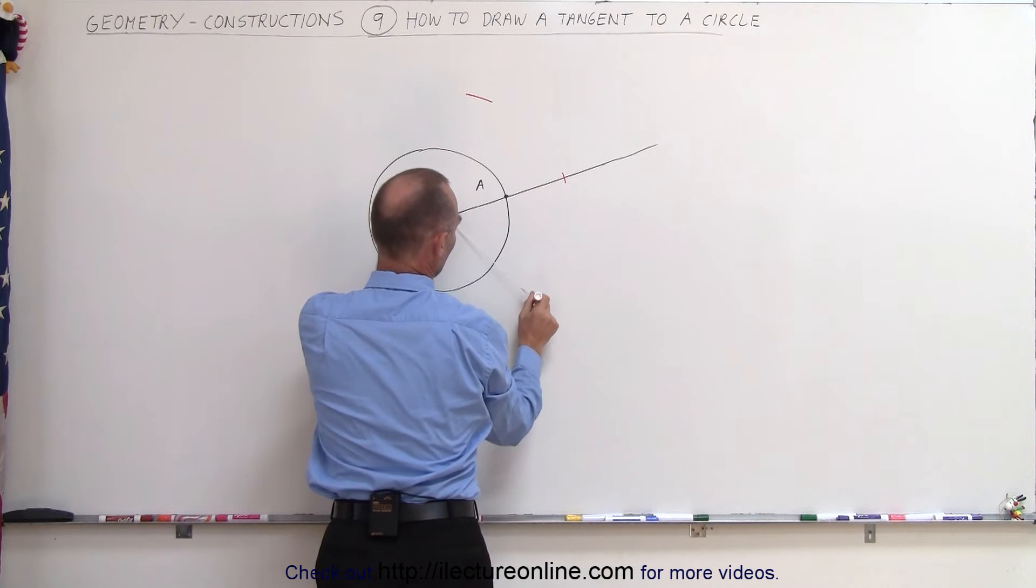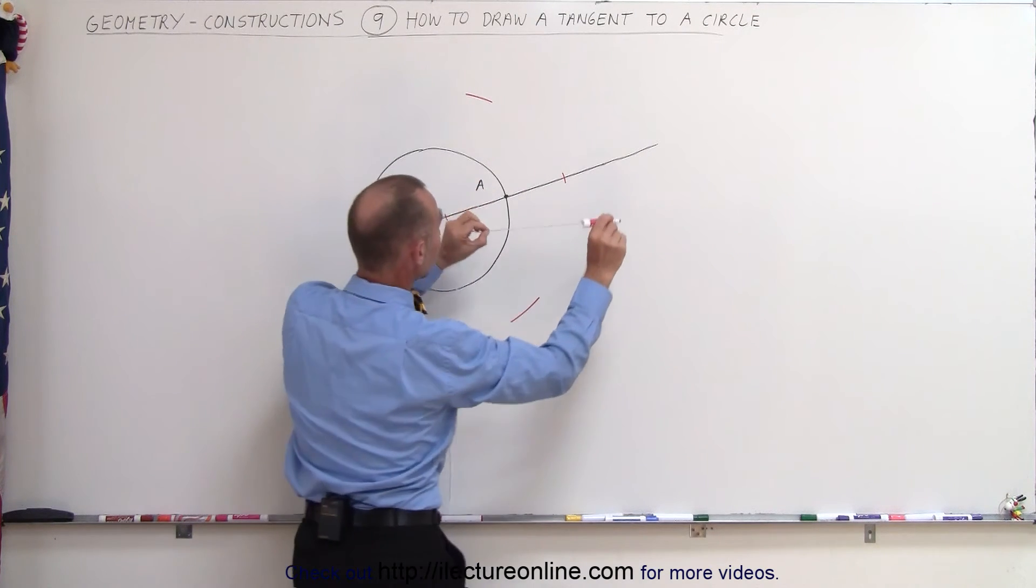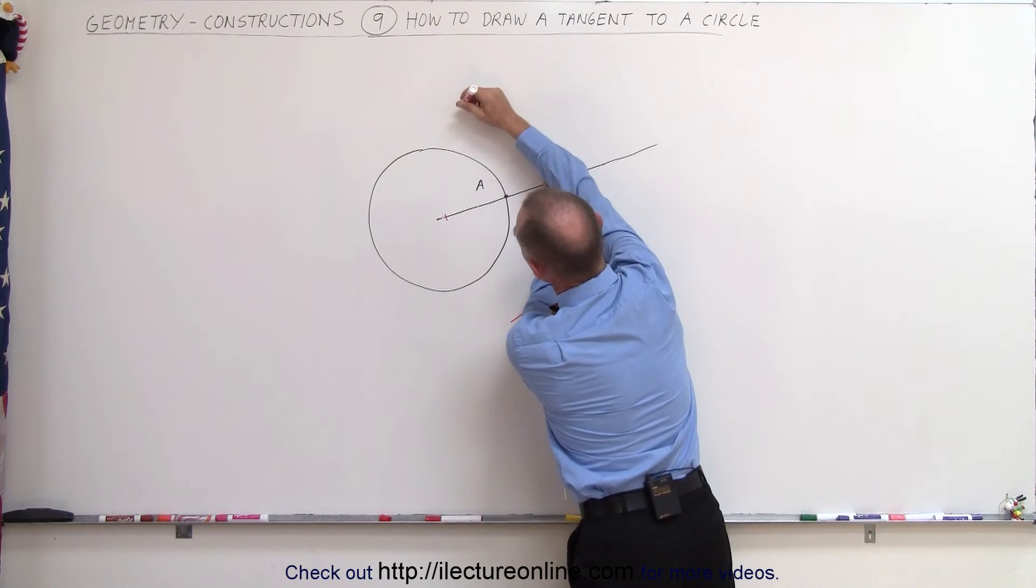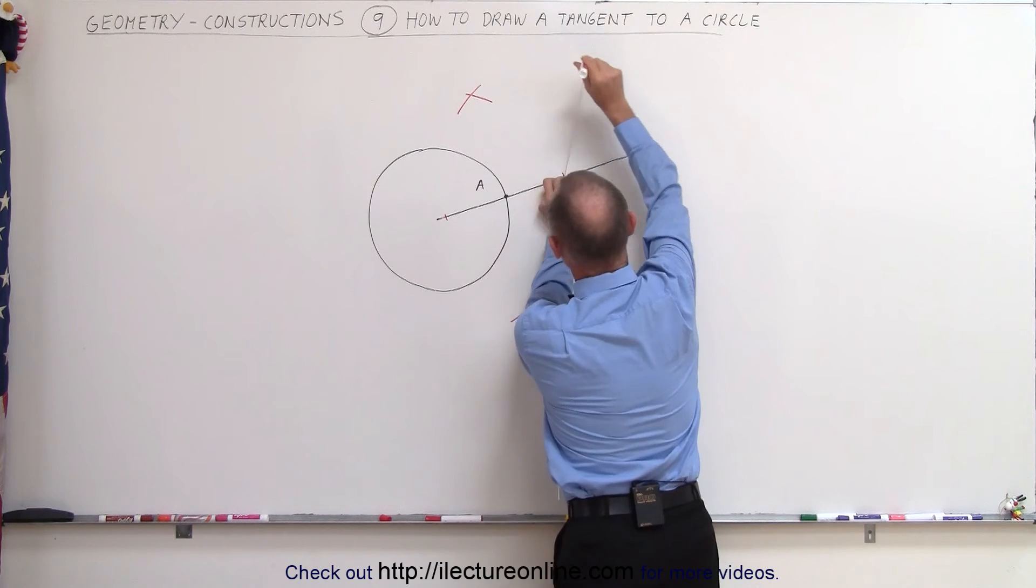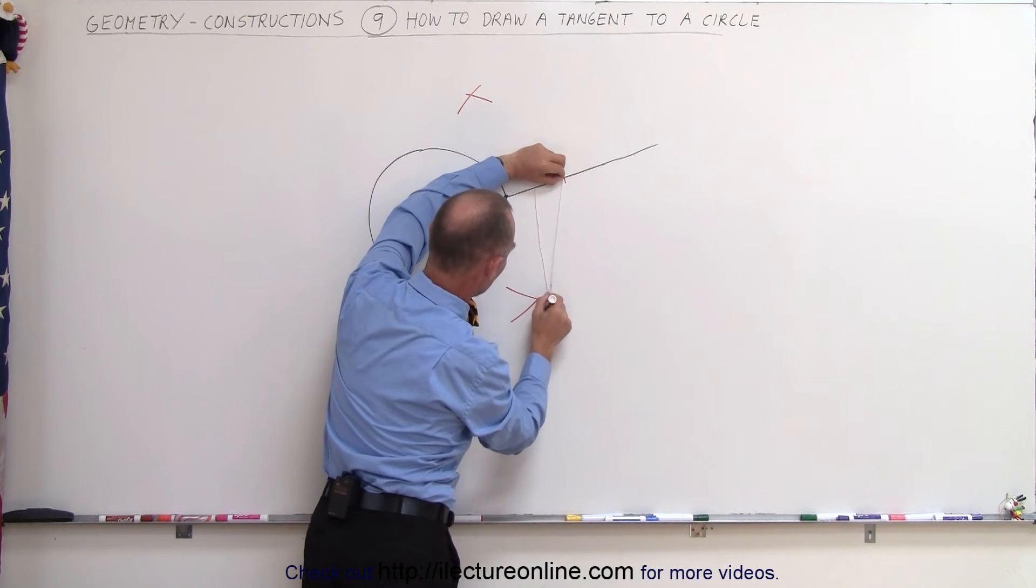I come over here and I draw an arc in this direction. Then using the same length string, I go to the other point right there. I draw another arc in this direction. And I come around here and I draw another arc in this direction.